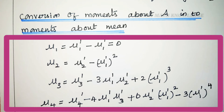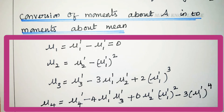Conversion of moments about any point A into moments about mean: Mu1 is always 0. Mu2 equals mu2 dash minus mu1 dash squared. Mu3 equals mu3 dash minus 3·mu1 dash·mu2 dash plus 2·mu1 dash cubed. Mu4 equals mu4 dash minus 4·mu1 dash·mu3 dash plus 6·mu2 dash·mu1 dash squared minus 3·mu1 dash to the power 4.